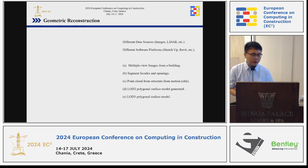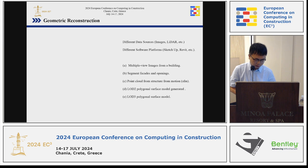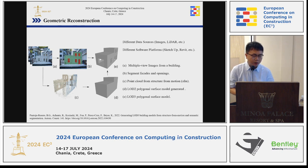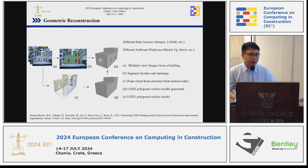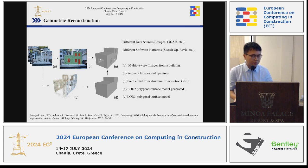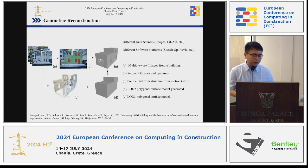The first topic I want to share is Geometric Reconstruction. Scholars use different data sources, like images and LiDAR, with different software platforms like SketchUp, to reconstruct real buildings into LOD1, LOD2, or LOD3 models. Here is an example: scholars capture multiple video images from a building, use deep learning to segment facades and openings, recover a point cloud from structure-from-motion, generate an LOD2 model from the point cloud, and then match the LOD2 model with the point cloud to generate an LOD3 model. Many other scholars use similar steps to reconstruct buildings as digital models.